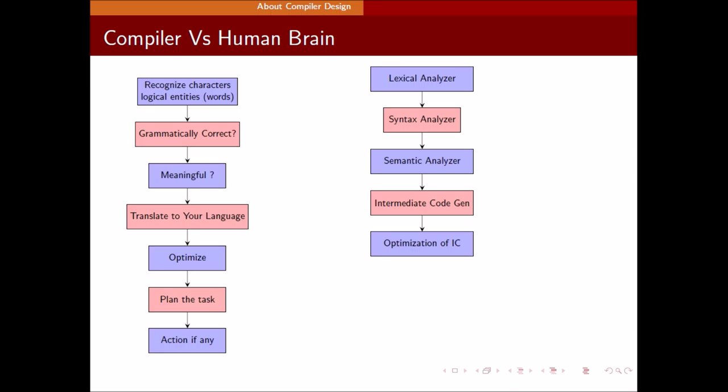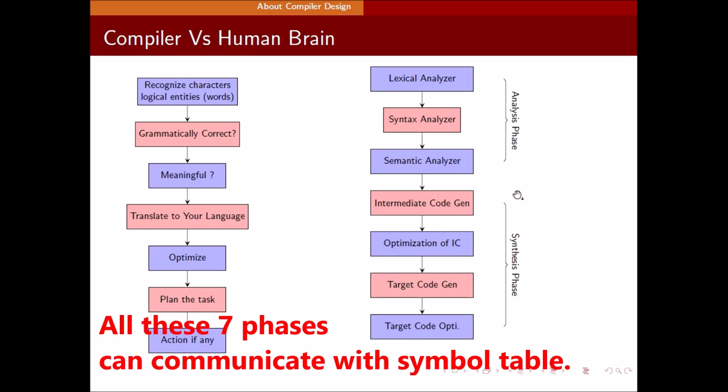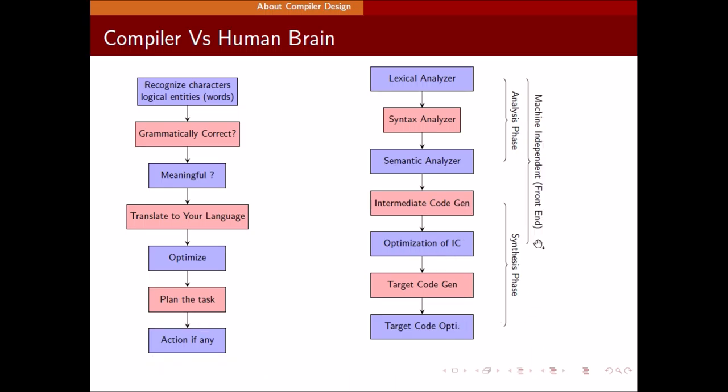If the logic is correct, we go for intermediate code generation. Once we generate the intermediate code, we optimize it. Next, the optimized intermediate code is used to generate the target code. Again, we need to optimize the target code according to our machine. These first three phases - lexical analyzer, syntax analyzer, and semantic analyzer - are called the analysis phase.